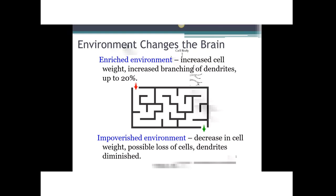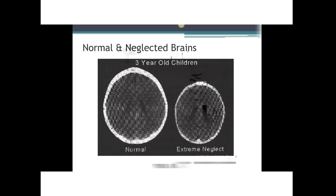In the impoverished environment, the exact opposite occurred: neurons decreased in size, dendrites shriveled, and in extreme impoverishment, neurons were actually lost. As recent research has shown, the human brain is affected by the environment in much the same way. This is a CT scan from Bruce Perry of the brain of a normal child and one who has suffered extreme neglect — even the size of the brain has been affected. We must consider that children from disadvantaged backgrounds have not experienced the same richness in their environments, and that this actually affects brain growth and neural connections.